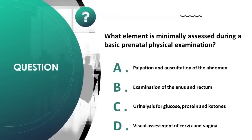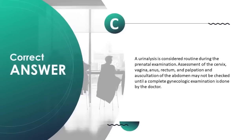What element is minimally assessed during a basic prenatal physical examination? A) palpation and auscultation of the abdomen, B) examination of the anus and rectum, C) urinalysis for glucose, protein, and ketones, D) visual assessment of cervix and vagina. Correct answer is C. A urinalysis is considered routine during the prenatal examination.